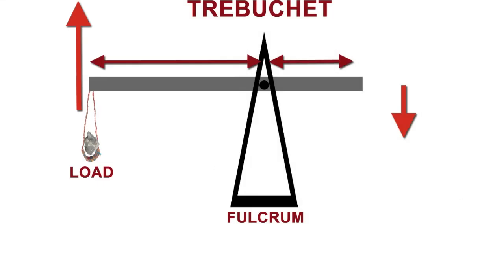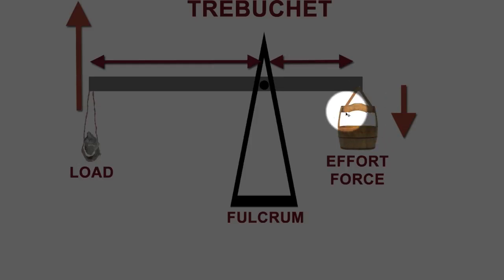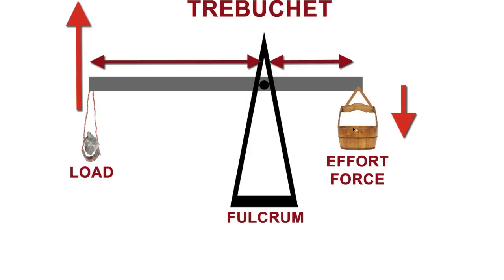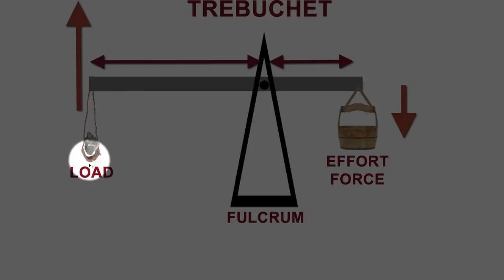Now all we need is an effort force. For that, we place a big basket on the other end of the trebuchet and we fill it with a large amount of weight. When that weight is released, the other end of the trebuchet moves very, very fast.